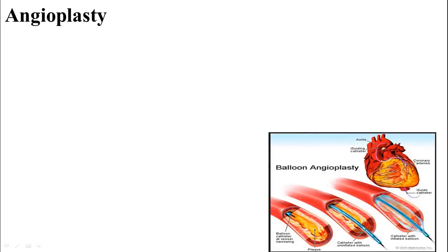In balloon angioplasty, a catheter with a balloon at the tip is passed through the blockage, and the balloon is inflated. The balloon compresses the atheromatous plaque. After balloon angioplasty, a stent — a metal device — is installed to keep the blood vessel open.